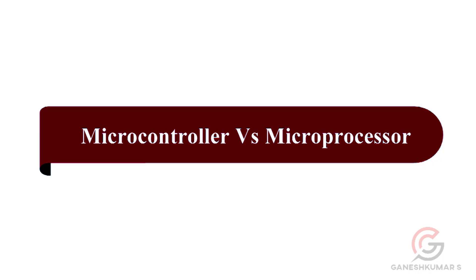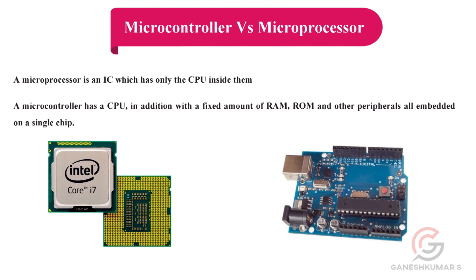In this session we are going to see what is meant by microcontroller and microprocessor. A microprocessor is an IC which has only a CPU inside it — that is, it has only processing power. Examples include Intel Pentium, Core 2 Duo, i3, i5, etc.